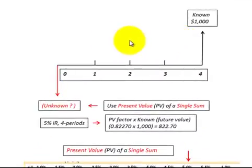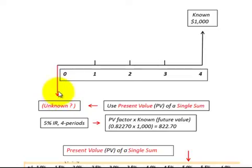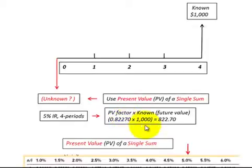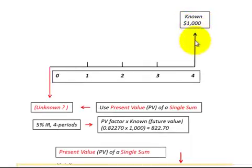When we're given a problem in accounting or finance, we first have to put that problem in terms of a cash flow diagram. For example, we might have a known amount at the end of the fourth year and want to know what it's worth at the beginning of the first year. In this case, we'd use a present value single sum table at 5% over 4 years to get the present value factor, then multiply it times the known future value — say $1,000.